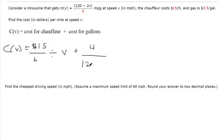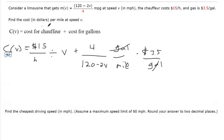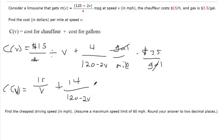That way, gallon is in the numerator and it'll cancel out with gallon in the denominator. I'm flipping the fraction, the reciprocal. This is now not miles per gallon, it's now gallons per mile. Now if I multiply this by $3.50 per gallon, these cross-cancel. That's the expression that we want because it's dollars in the numerator, miles left over in the denominator. If I clean that up using the letter V, that's 15 over V, and then 3.5 times 4, that's 14 over 120 minus 2V.